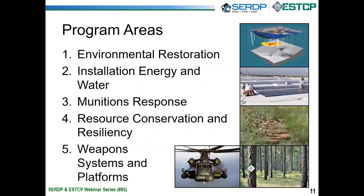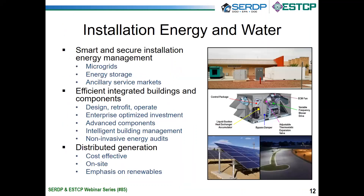There are four program areas in CERDUP and five in ESTCP. The Installation Energy and Water Program is only in ESTCP, while the other four — Environmental Restoration, Munitions Response, Resource Conservation and Resiliency, and Weapon Systems and Platforms — are both CERDUP and ESTCP programs managed jointly by a designated program manager. Our webinar today focuses on research and demonstrations conducted under the Installation Energy and Water Program area, which has three main areas: Smart and Secure Installation Energy Management, Efficient Integrated Buildings and Components, and Distributed Generation.